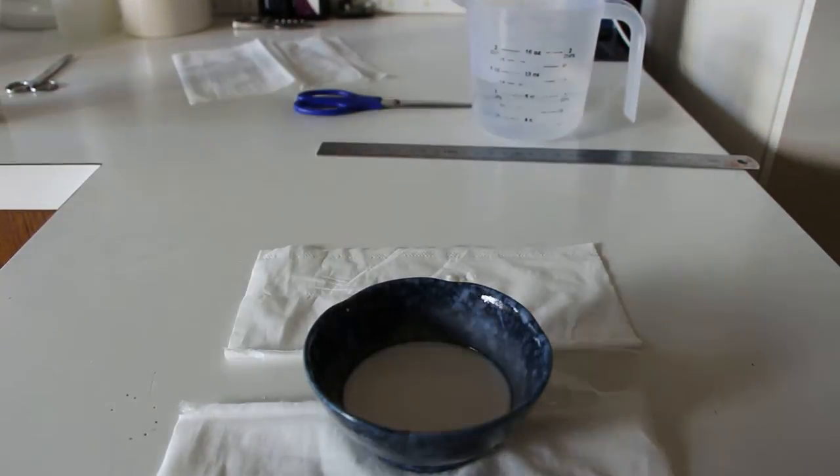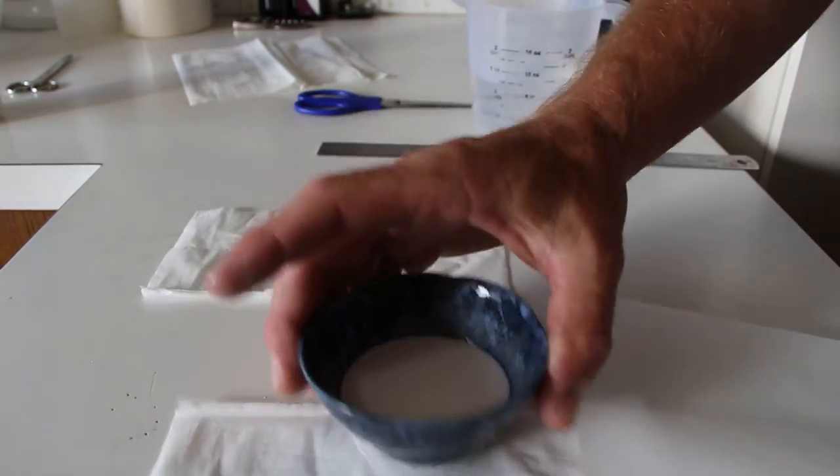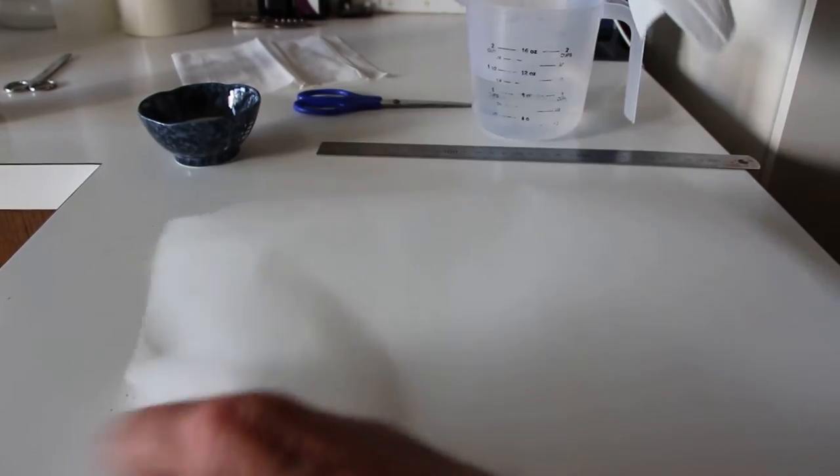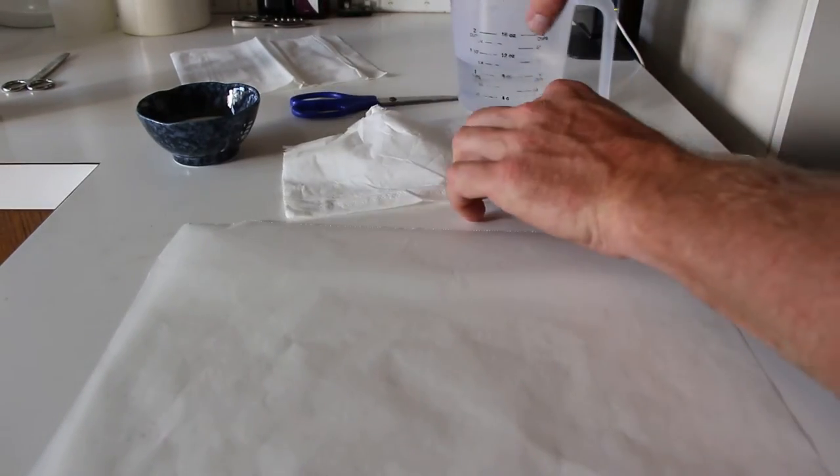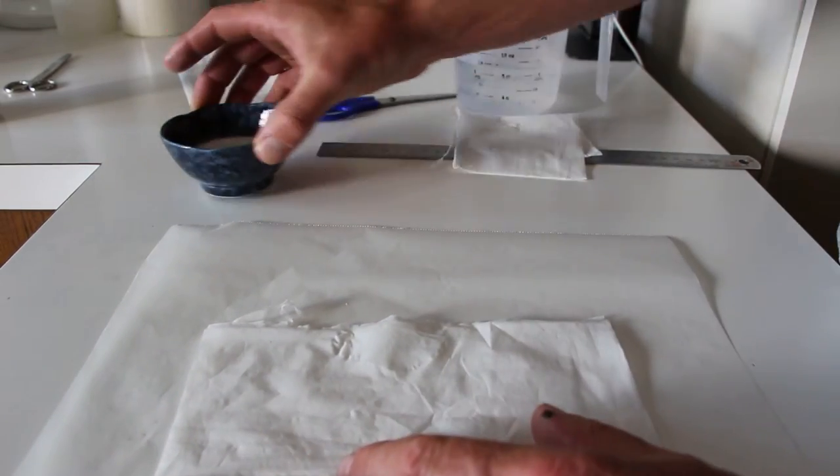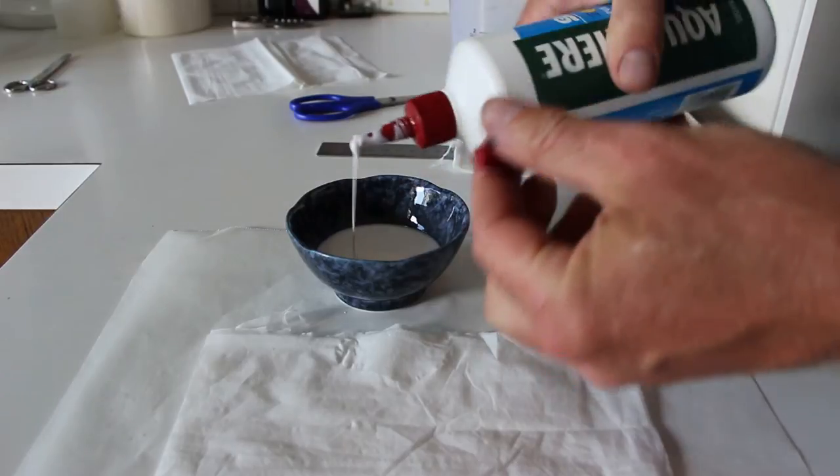After that, work on some baking paper so nothing sticks to anything, and pretty much all you want to do is wet the tissue paper down. I want to put a little bit more PVA in there.